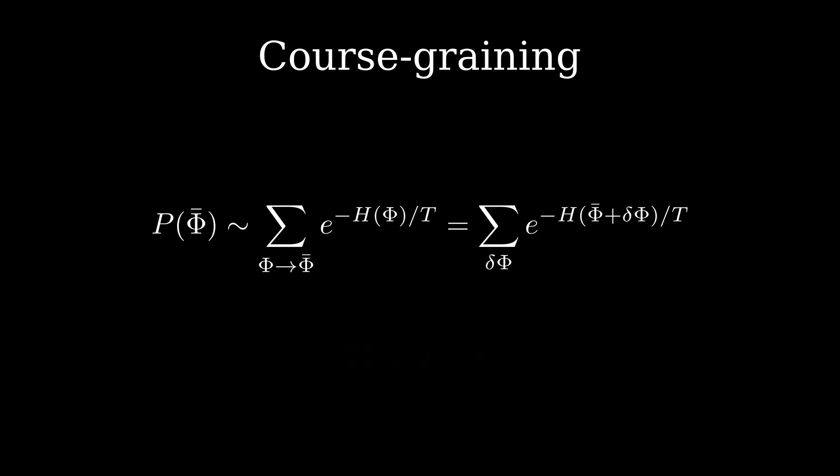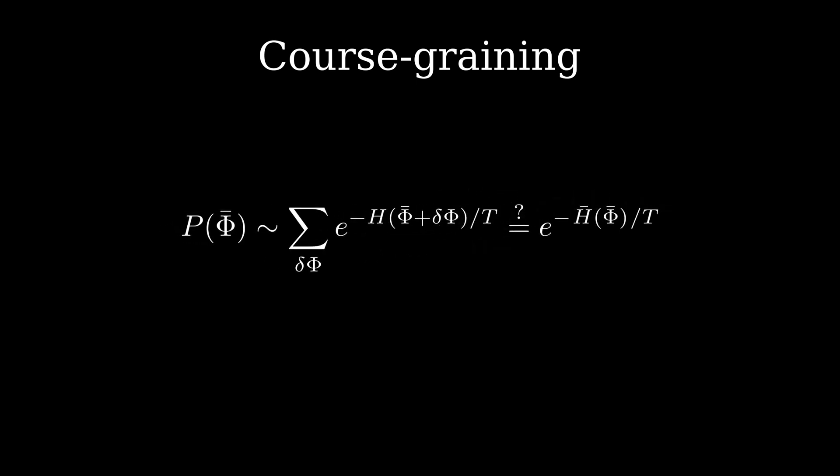The whole point of this process is to figure out how our system behaves at this larger scale, so we would like to get rid of the smaller scale by evaluating the sum over delta phi. We want to get a result that looks like a Gibbs distribution, this time with some new definition of the energy of phi bar. This is the hard part.